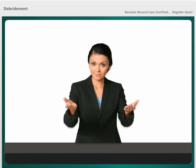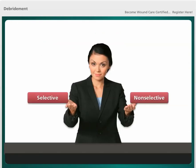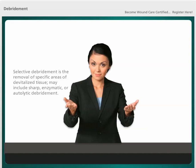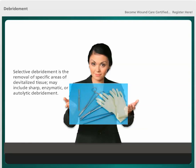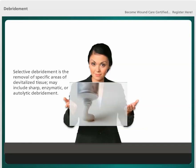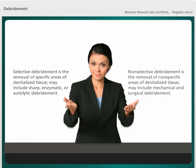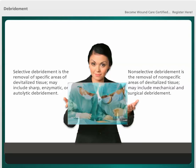Debridement is generally described as either selective or non-selective. Selective debridement involves the removal of specific areas of devitalized tissue and may include sharp, enzymatic, or autolytic debridement. Non-selective debridement is the removal of non-specific areas of devitalized tissue and may include mechanical and surgical debridement.